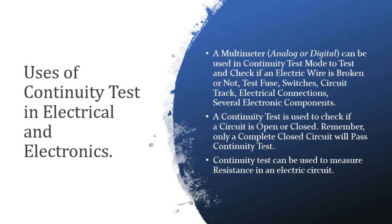Uses of continuity test in electrical and electronics: A multimeter, analog or digital, can be used in continuity test mode to check if an electric wire is broken or not, test fuses, switches, circuit tracks, electrical connections, and several electronic components. A continuity test is used to check if a circuit is open or closed — only a complete closed circuit will pass a continuity test. Continuity test can also be used to measure resistance in an electric circuit.